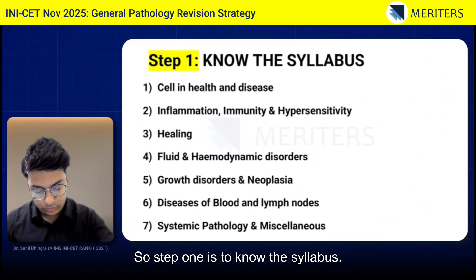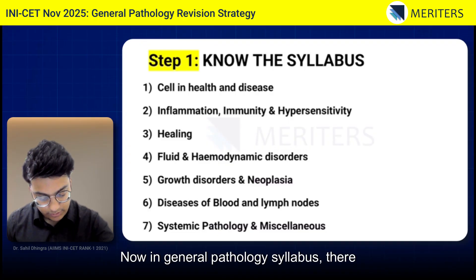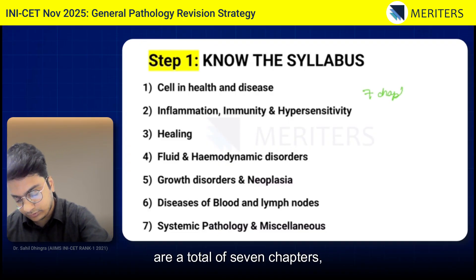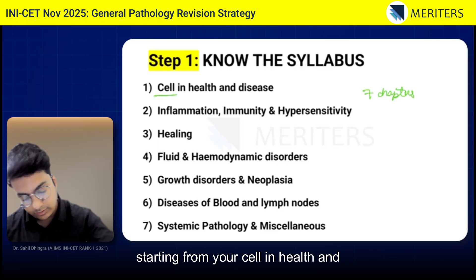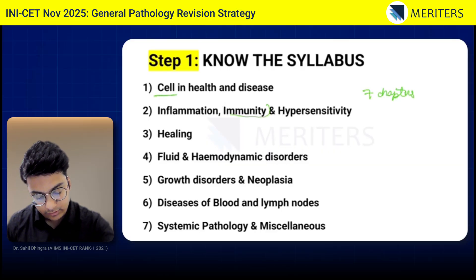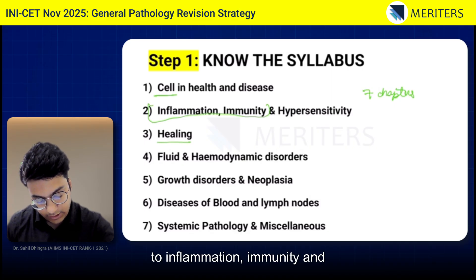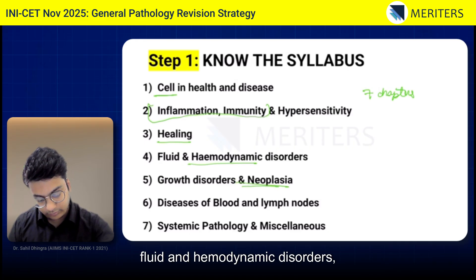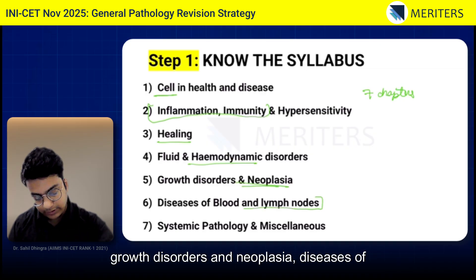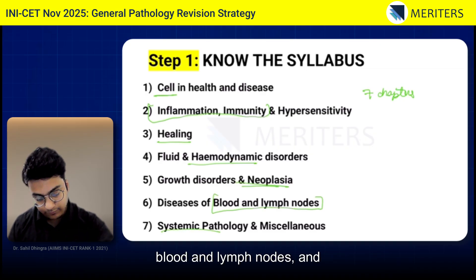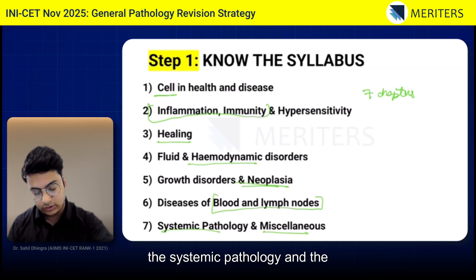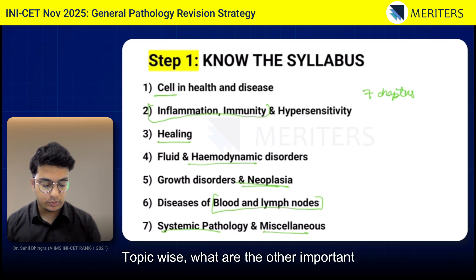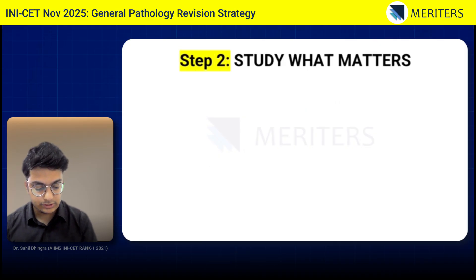Step one is to know the syllabus. In the general pathology syllabus, there are a total of seven chapters: starting from Cell in Health and Disease, to Inflammation, Immunity and Hypersensitivity, followed by Healing, Fluid and Hemodynamic Disorders, Growth Disorders and Neoplasia, Diseases of Blood and Lymph Nodes, and Systemic Pathology and Miscellaneous. I will be telling you topic-wise what are the important areas in those chapters.